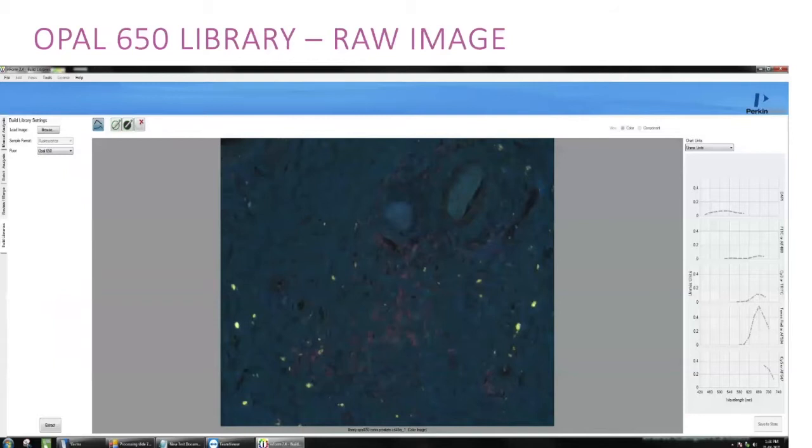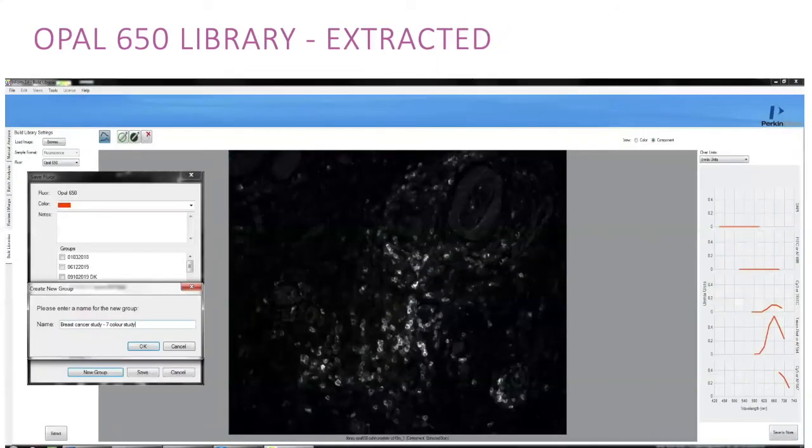Here we have the raw spectral image for opal 650. And as you can see on the graph on the right, there is an emission peak in both Texas red and Cy5 epi cube filters. And here we have the extracted or spectrally unmixed image with CD45RO cells shown in white. On the right, you can see the emission spectra with the main peak in the Texas red channel and a smaller peak in Cy5.